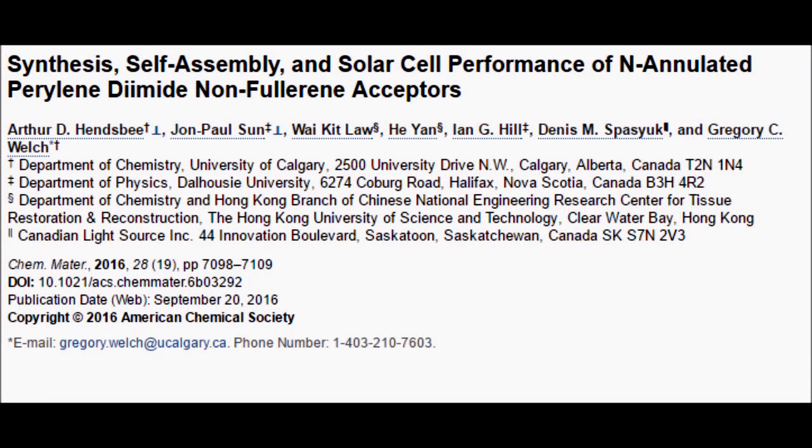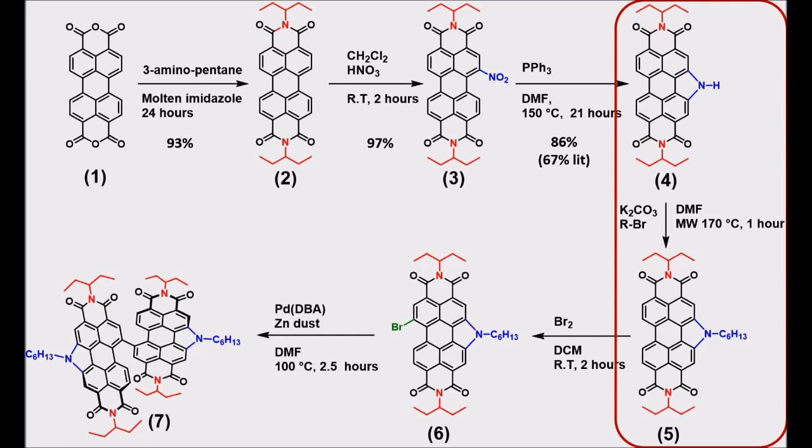Hello and welcome to Welch Lab Chemistry. Today we will be doing the fourth reaction in our series to make an N-annulated perylenediamide dimer, the alkylation of N-annulated perylenediamide.